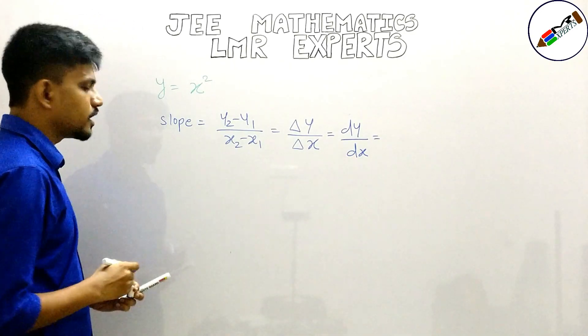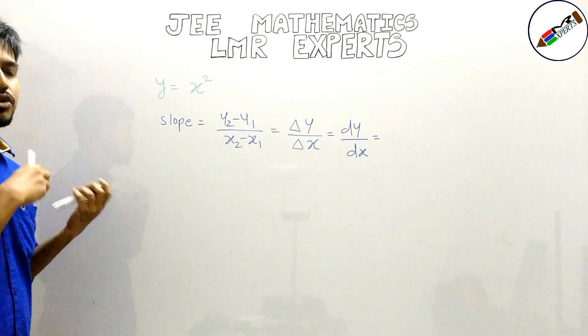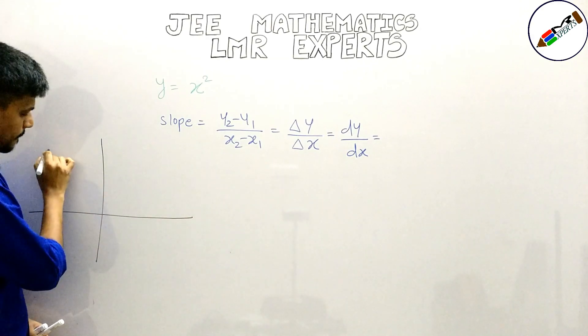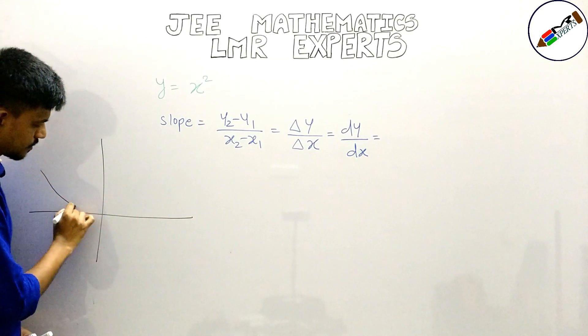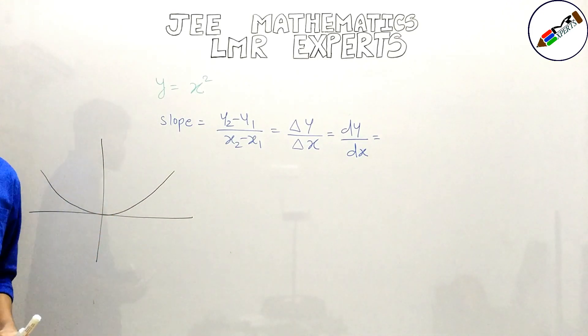Now if I have been provided a curve which is y is equal to x square, it can be drawn as follows. This is the curve which represents y is equal to x square.